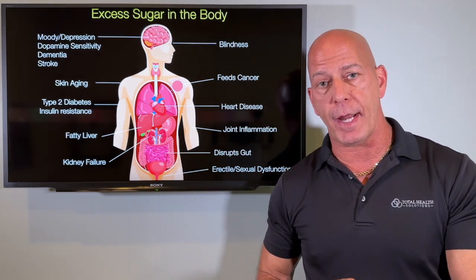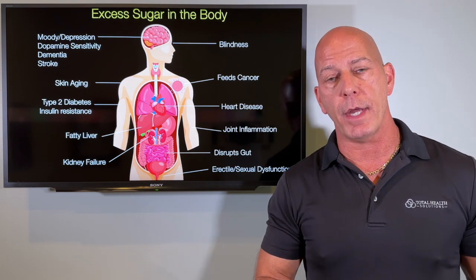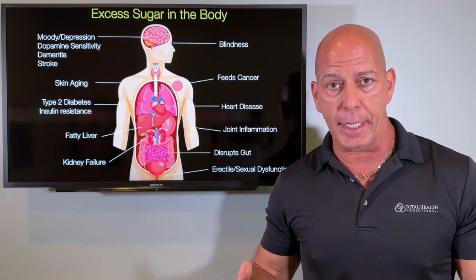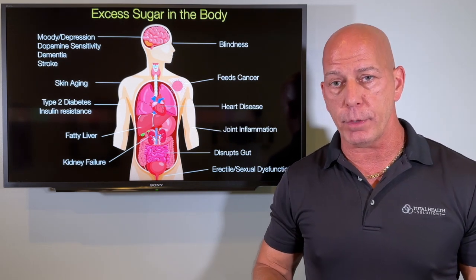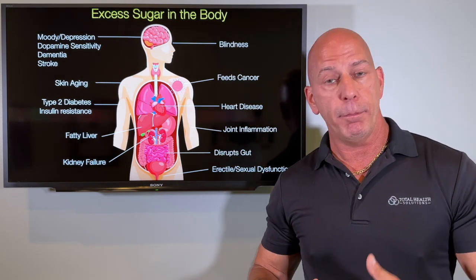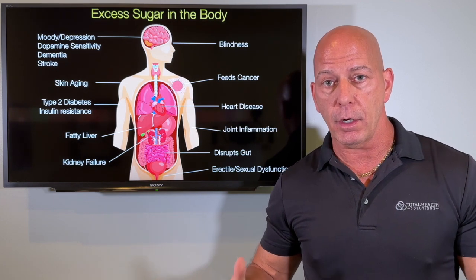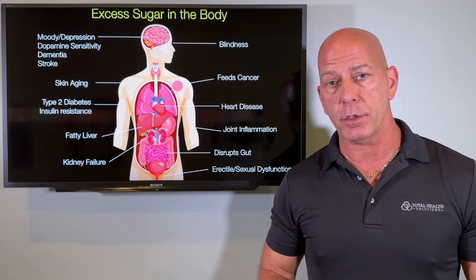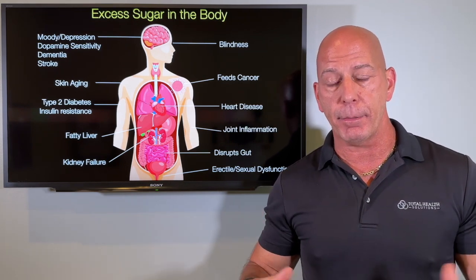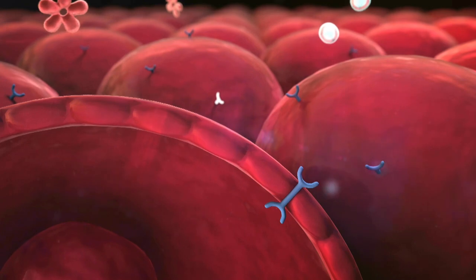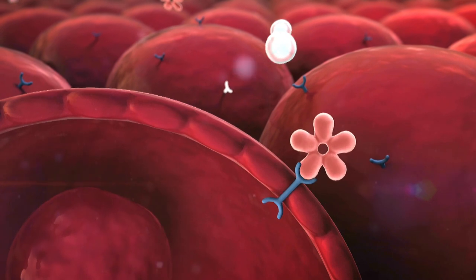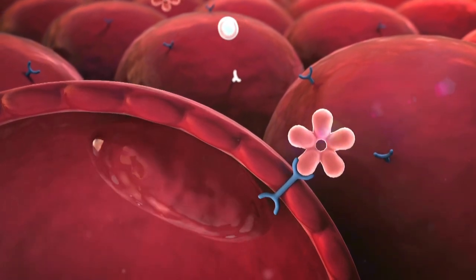Insulin resistance is probably one of the biggest factors we see when working with our clients for diabetes. They are not even sensitive to insulin anymore. Their body could be producing plenty of insulin — in fact, they may have lots of insulin coming in from different drugs they're on when they first come to us as patients. But the problem is they're insulin resistant. They've got insulin floating around in their bloodstream, but it's not getting heard by the cells. The cells aren't even aware of it, so they're not letting insulin bring the sugar into the cells to be burned for fuel.